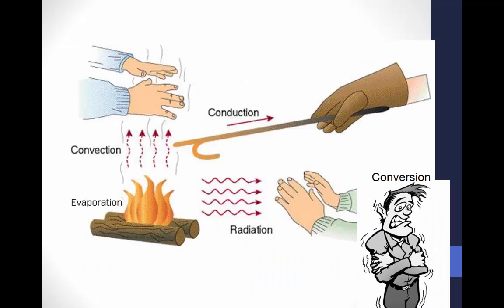This picture includes an example of the five types of heat transfer using a fire. At the top left is convection — the transfer of heat by movement of a medium, or the heat moving off the fire via air. At the bottom left is evaporation — heat loss from the exchange from a liquid to a gaseous state as the fire changes the state of the wood as it burns. At the middle top is conduction — the metal poker becomes hot from direct contact with the fire. At the bottom middle is radiation — the transfer of energy without use of a medium. At the bottom right is conversion — shivering from being away from the fire too long converts mechanical energy into heat.